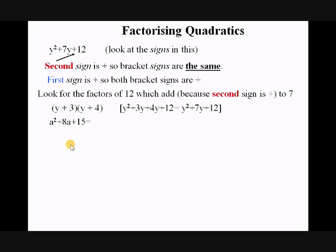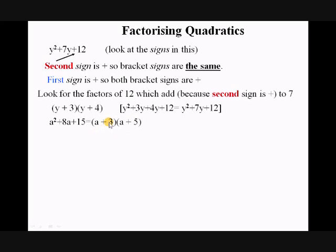The bracket signs are going to be the same because the second sign is plus, and they're both going to be plus because the first sign is plus. The factors of 15 which add to 8 are 3 and 5: 5 × 3 = 15 and 3 + 5 = 8. That works because when we multiply out the brackets, 5a + 3a gives 8a.